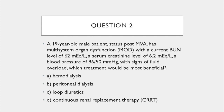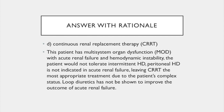Question 2. A 19-year-old male patient, status post motor vehicle accident, has multisystem organ dysfunction, with a current BUN level of 62, a serum creatinine level of 6.2, a blood pressure of 96 over 50, with signs of fluid overload. Which of the following treatments would be most beneficial? The answer is D: continuous renal replacement therapy.